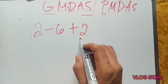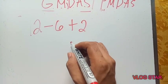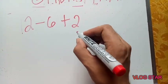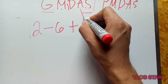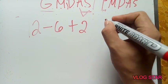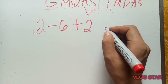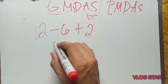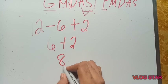Another example: 12 minus 6 plus 2. Remember that subtraction and addition have the same level of priority. Always perform the one which appears first from left to right. Even though addition comes before subtraction in GMDAS, we consider which appears first from left to right. So 12 minus 6 equals 6, then 6 plus 2 equals 8.